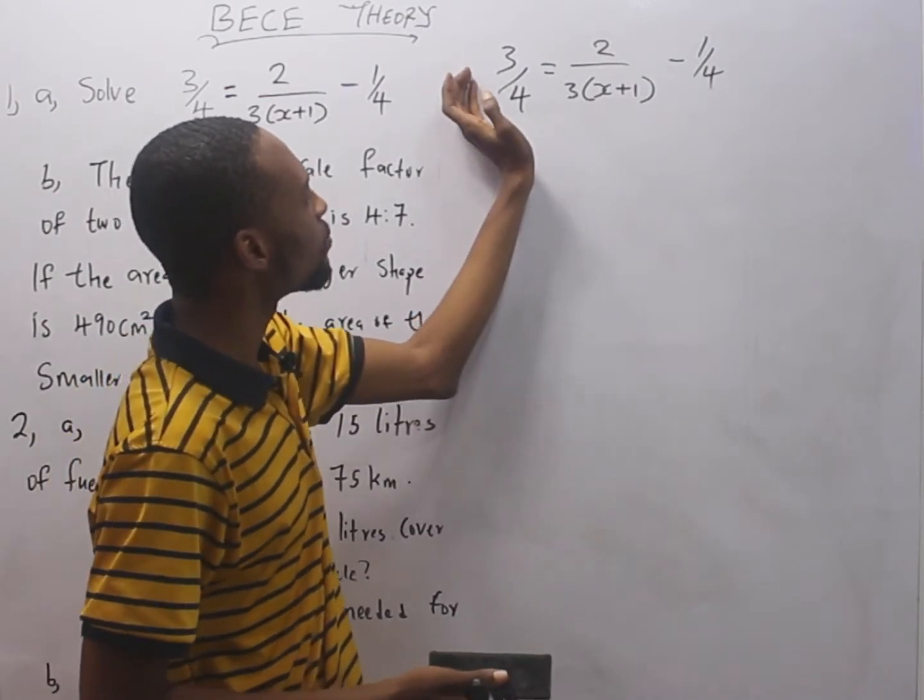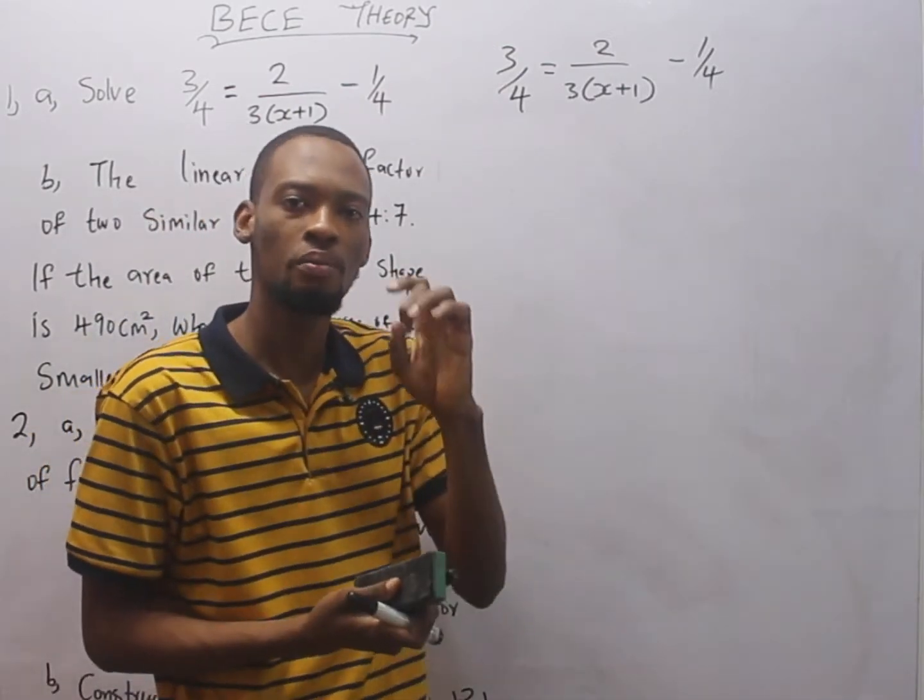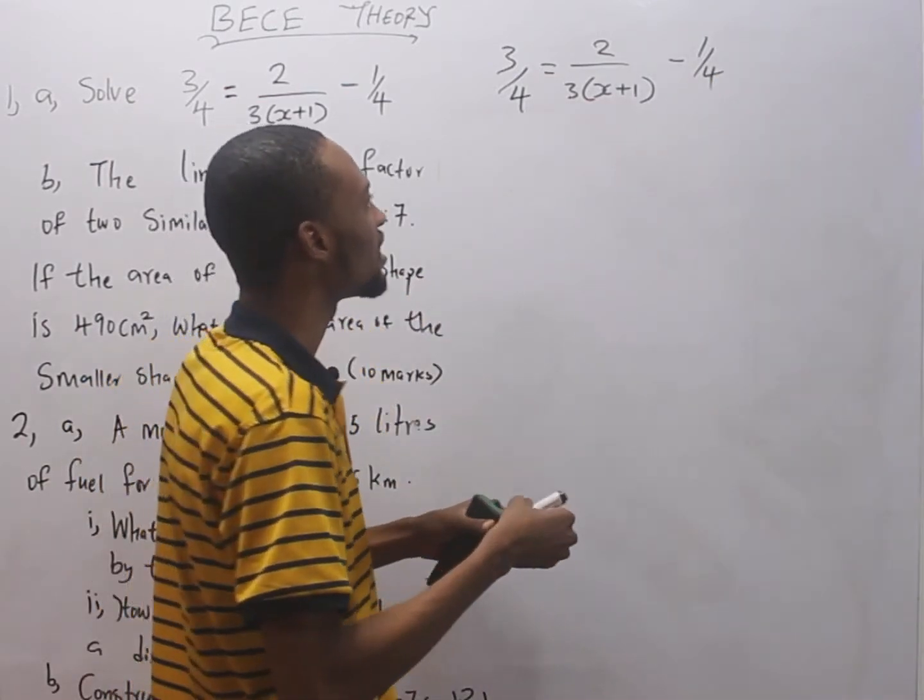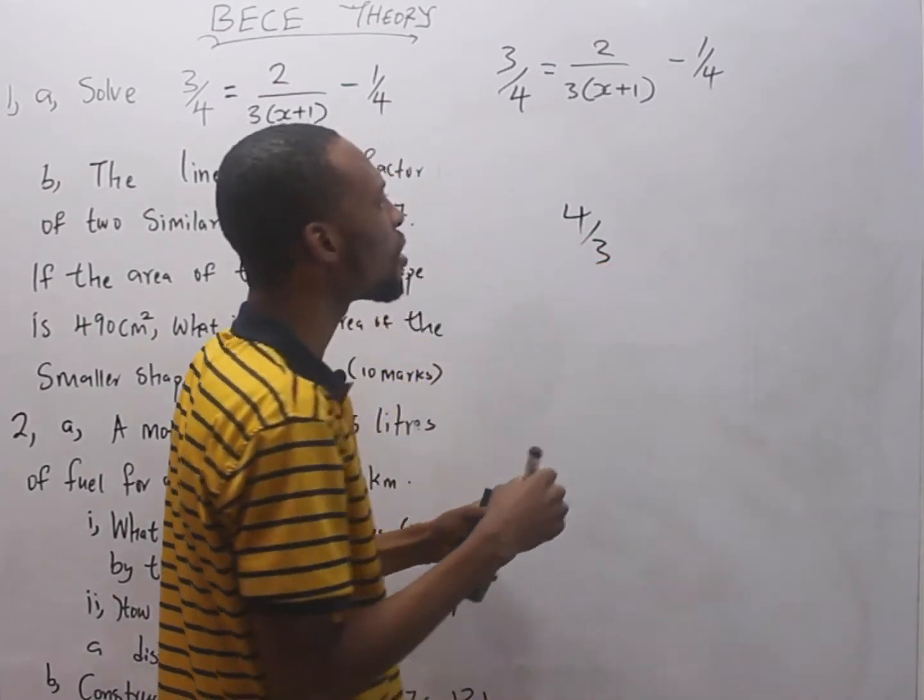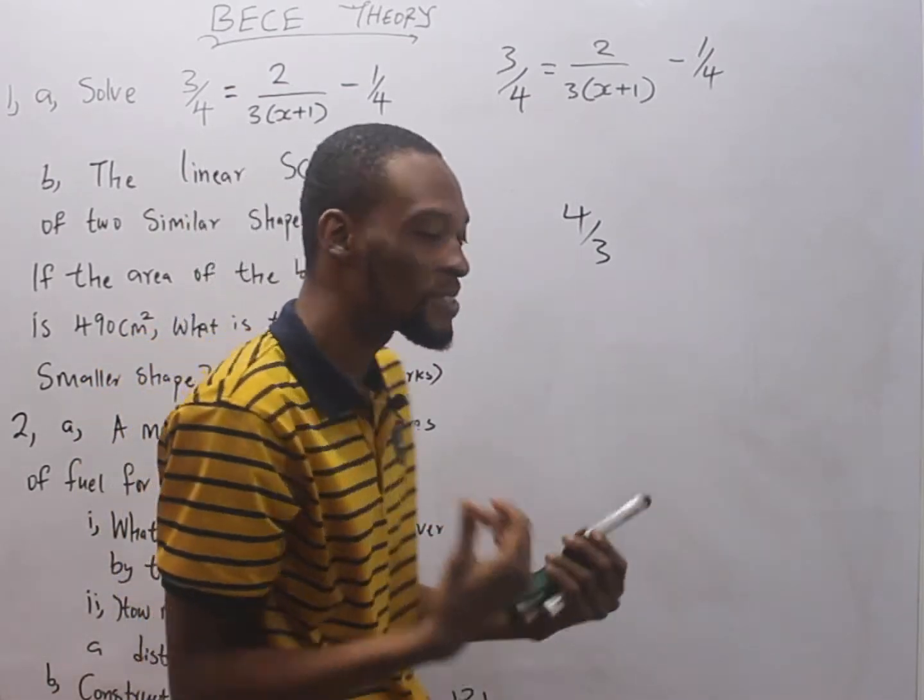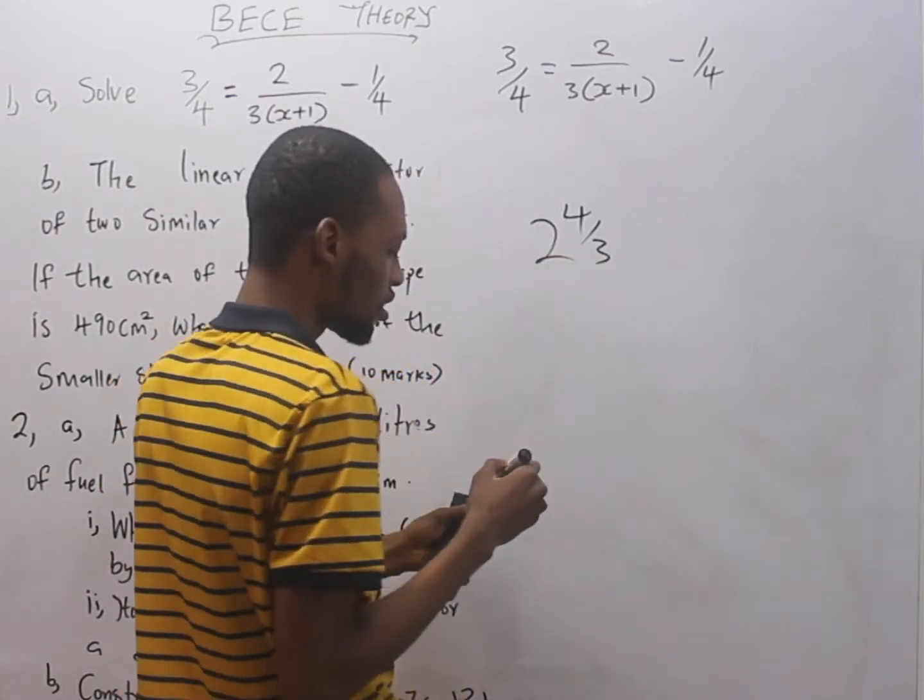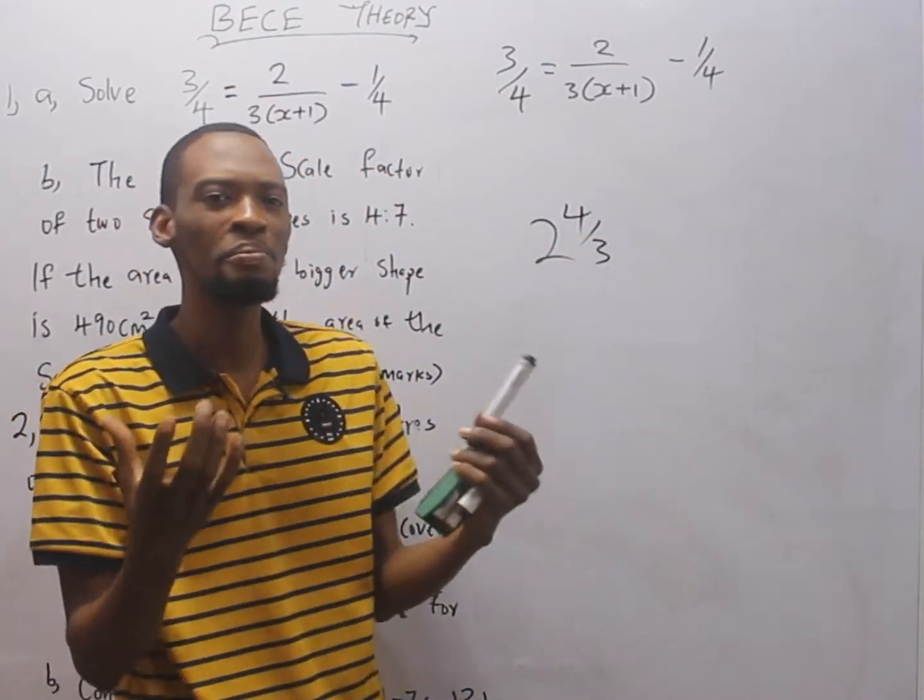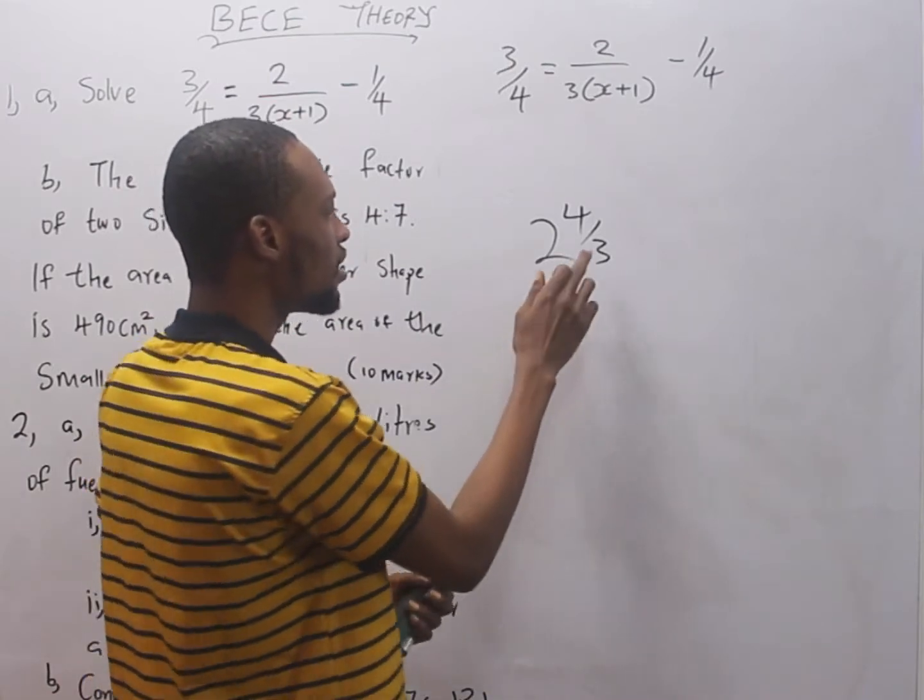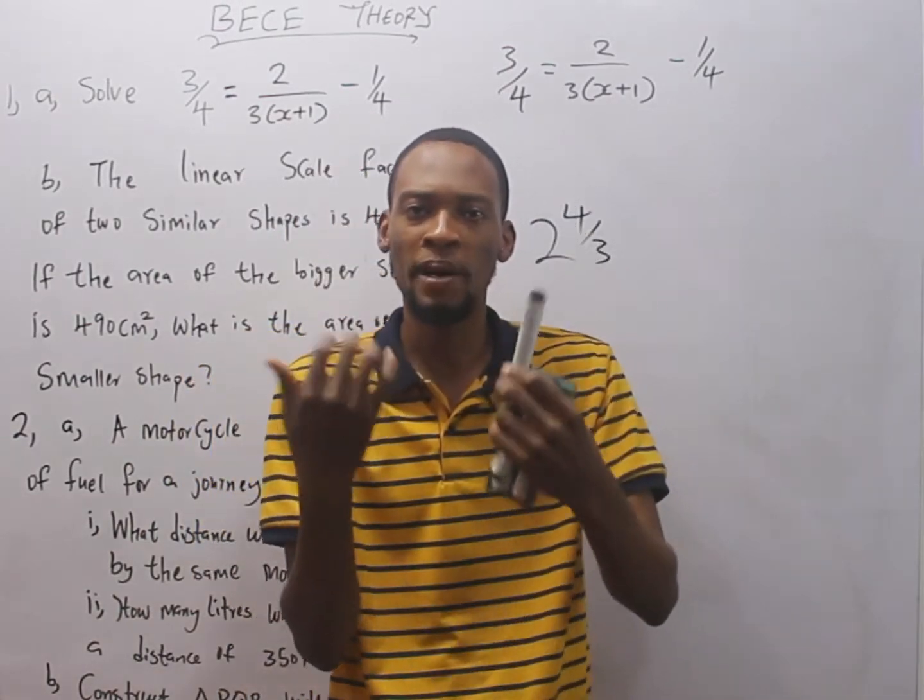This is a proper fraction because the numerator is smaller than the denominator. This is also a proper fraction. But when you have something like 4 over 3, it is improper because the top, the numerator, is bigger than the bottom. In that case, we say you are carrying something that is bigger than you.